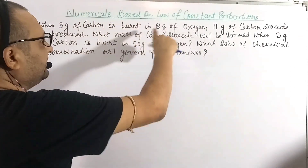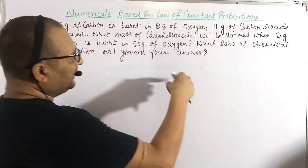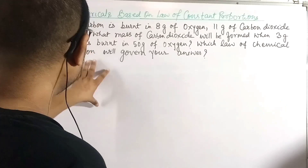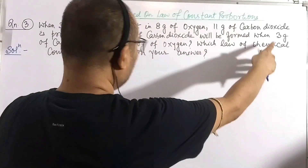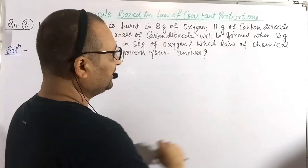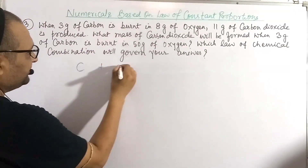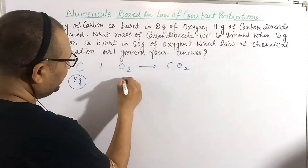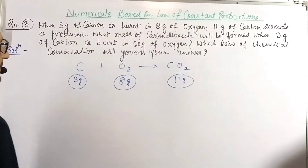Question number three: When 3 gram of carbon is burned in 8 gram of oxygen, 11 gram of carbon dioxide is produced. The reaction is C + O₂ → CO₂. Here 3 gram of carbon burns with 8 gram of oxygen to give 11 gram of CO₂, as per the statement.